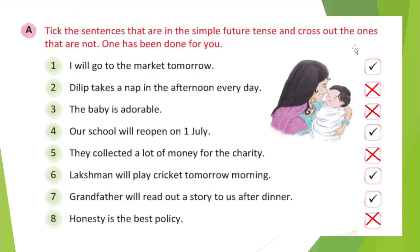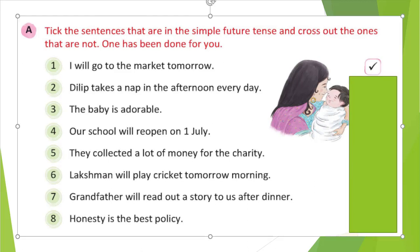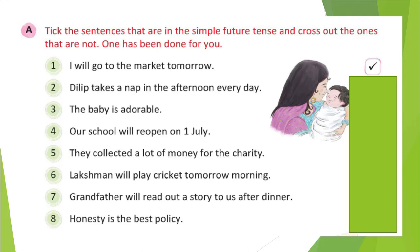Let's see some exercises. The first exercise says: take the sentences that are in the simple future tense and cross out the ones that are not. We have 8 sentences. Whichever is in simple future tense we mark with a tick, and whichever is not in simple future tense we mark with a cross.